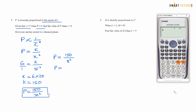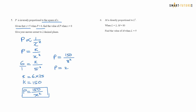Let's open the calculator. 150 divided by 8 squared. The answer is 2.34375. To 2 decimal places, you need to round: the third decimal is less than 5, so round down. So P equals 2.34. That is the answer for question number 5.